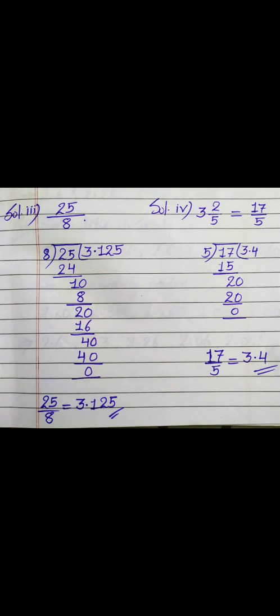In the fourth one, it is 3 whole 2 upon 5, which is a mixed fraction. First we convert this into an improper fraction: it becomes 17 upon 5. After simplification we get 3.4 in decimal form.